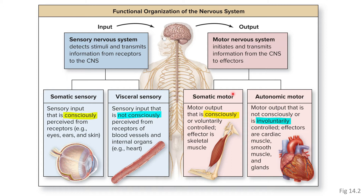The autonomic motor system contains motor output that is involuntarily controlled — output that you don't have conscious control over. The main effectors here are going to be cardiac muscle, smooth muscle, and also some glands. For example, cardiac muscle is the tissue found in the heart. You can't consciously tell your heart to stop beating, so the neurons going to that cardiac muscle are an example of components of the autonomic motor system.